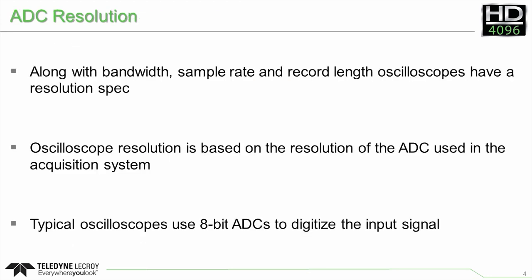In a digital oscilloscope, the resolution of the instrument comes from the resolution of the analog-to-digital converter, known as an ADC, used in the acquisition system. Today's typical benchtop oscilloscopes have an 8-bit ADC, which digitizes signals using 256 quantization levels.